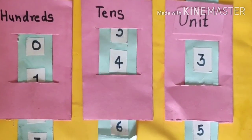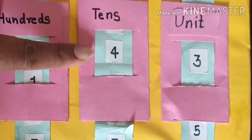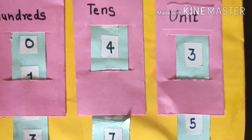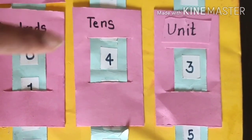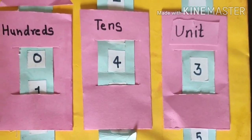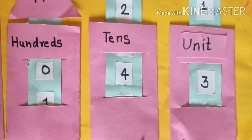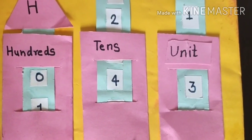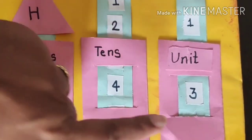Now here comes another one. Which number is this? This is 4. And at which place is 4 written? 4 is written at the 10th place. I hope you know how to read numbers from your previous class, as you have learned 2-digit numbers. So we read this as 43.